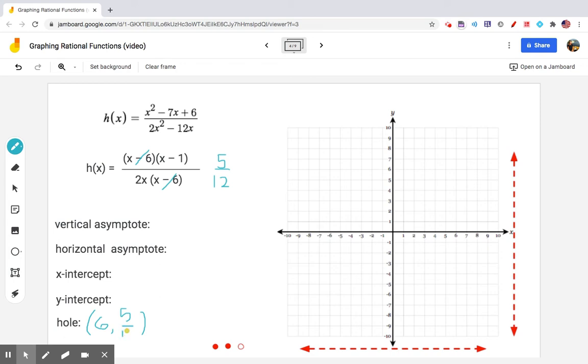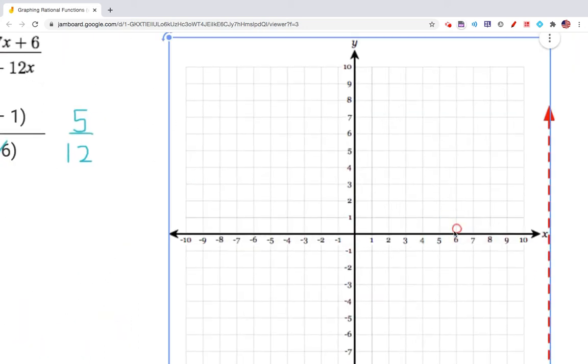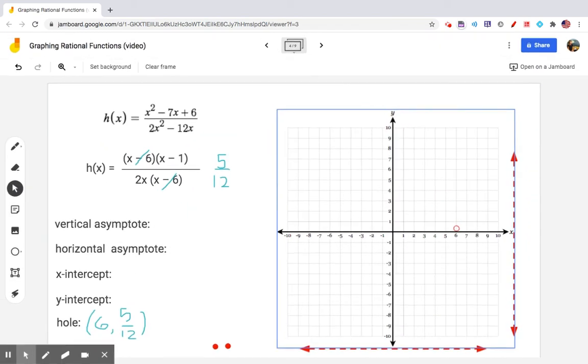So there is a hole in the graph at 6 comma 5 twelfths. I can drag that over right now. Here's 6. 5 twelfths is just a little bit below the halfway mark. That's pretty good.